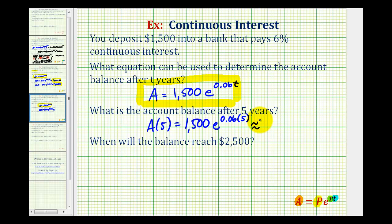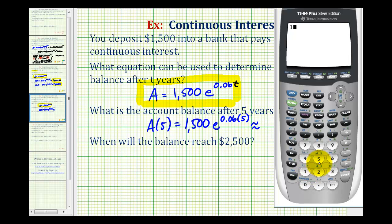And now we'll use the calculator to get a decimal approximation for this value. If we press second natural log it brings up e raised to the power of. And we can just type in 0.06 times five. Press enter. And the account balance is going to be approximately $2,024.79, rounded to the nearest cent.